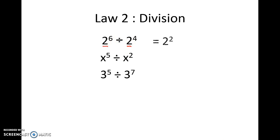That should give us 2 to the power 2, subtracting the 4 away from the 6. In the second one, x to the power 5 divided by x squared should give us x cubed. And 3 to the power 5 divided by 3 to the power 7 will give us 3 to the power negative 2. Notice in this instance we have 3 to the power 5 taking 7, 3 to the negative 2.